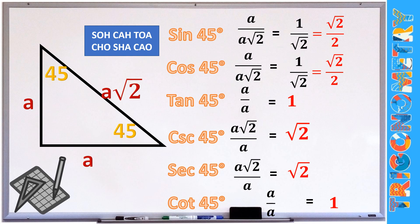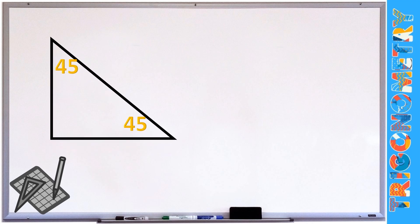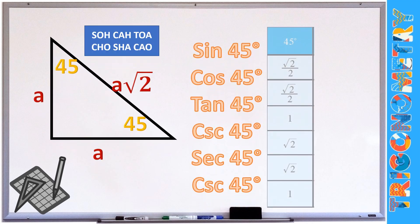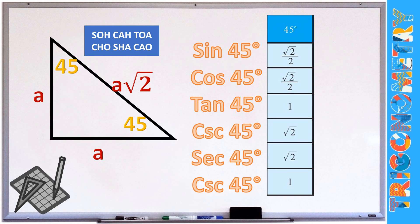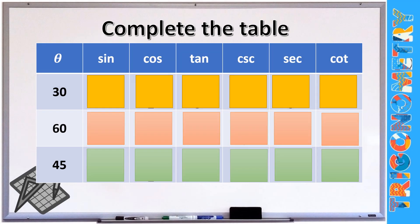Cotangent 45° — opposite and adjacent are both A, so that's equivalent to 1. These are the six trigonometric ratios for the 45 degree angle: sine = √2/2, cosine = √2/2, tangent = 1, cosecant = √2, secant = √2, cotangent = 1. Now let's have a summary of the 30, 60, and 45 degree angle values. I would like you to pause this video and complete the table on your own.